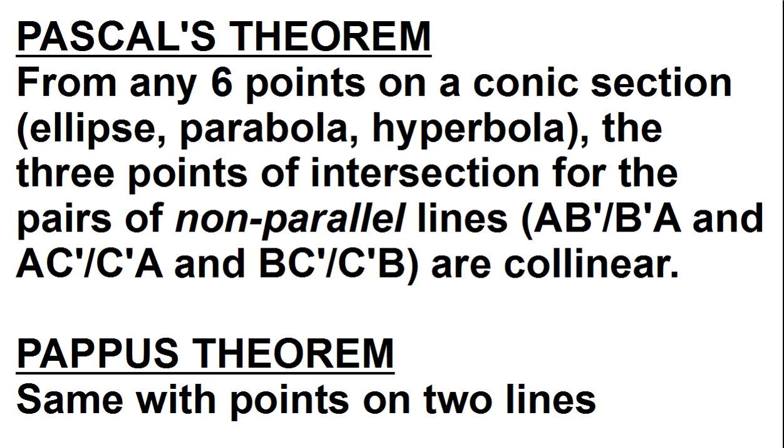The reason this happens, it's known as Pascal's theorem, which is, from any six points on a conic section, when you draw out the lines AB prime, BA prime, AC prime, C prime A, and BC prime, C prime B, as long as none of those pairs of lines are parallel, as long as they're non-parallel pairs of lines, the points of intersections of those lines, those three points, will be collinear.